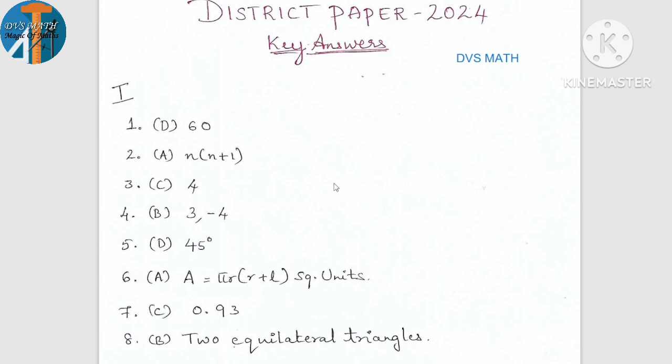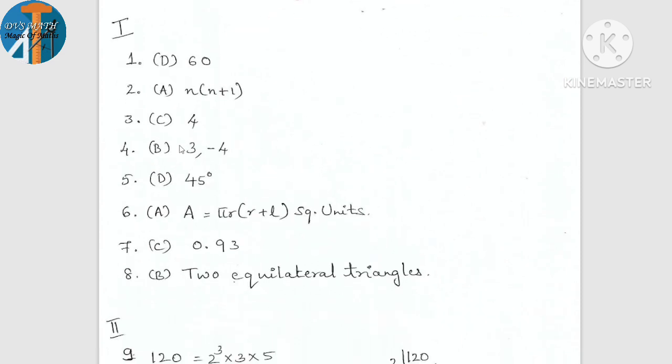First main question, option with option. First option 60, A option. N into N plus 1. C, B, D, A, and the answer is that option.